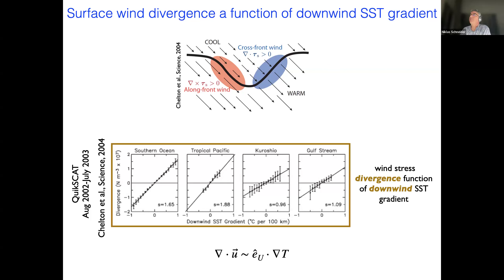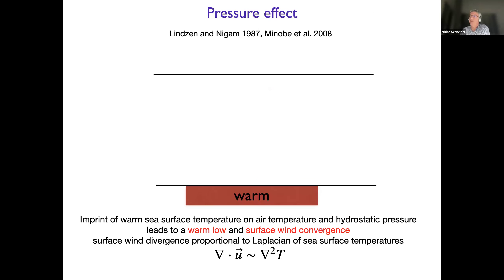The pressure effect is again something very classic. Both of these processes were first developed in the tropics. The pressure effect: we have the boundary layer and sea surface temperature here, top of the boundary layer. Now we have a warm blob in the middle. Let's say the winds are very weak, or that the scales associated with sea surface temperatures are very large, such that the air has plenty of time to adjust to the underlying sea surface temperatures. Then we simply imprint the warm sea surface temperatures in the air temperatures, and hydrostatically speaking, we get a low pressure over the warm sea surface temperatures.